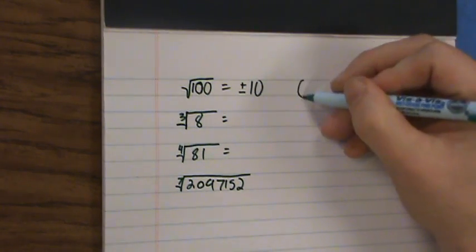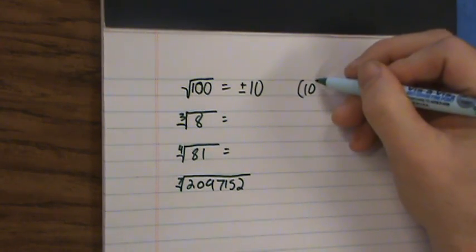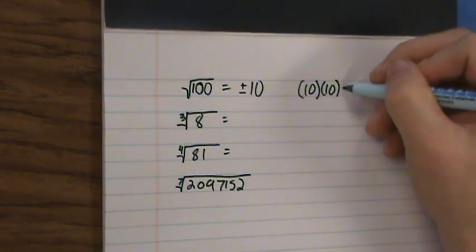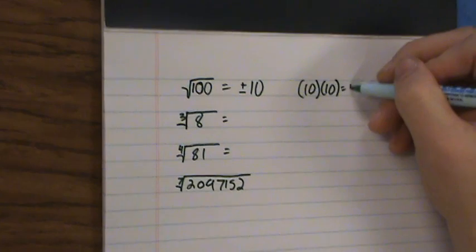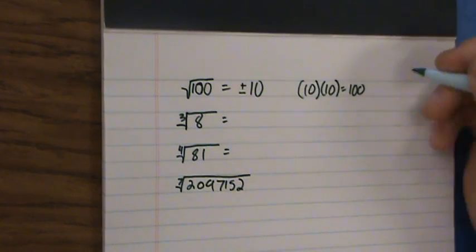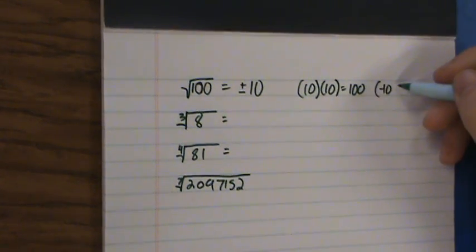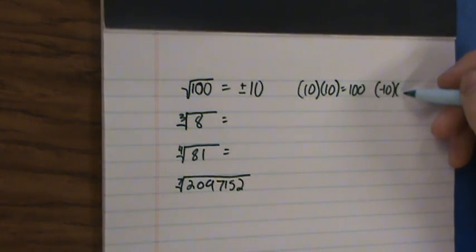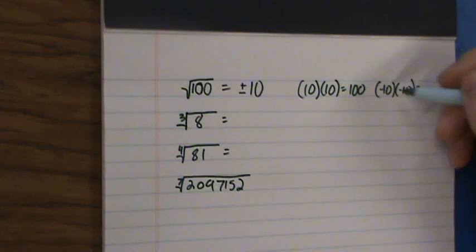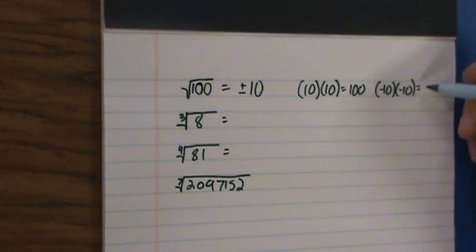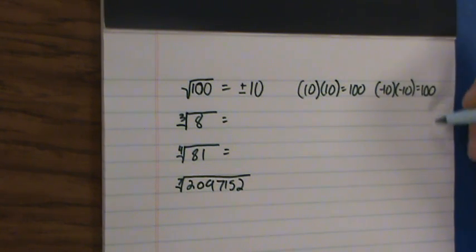You can see 10 times 10 — a positive times a positive — is a positive 100. Also, negative 10 times negative 10 — a negative times a negative is a positive — and that is positive 100.